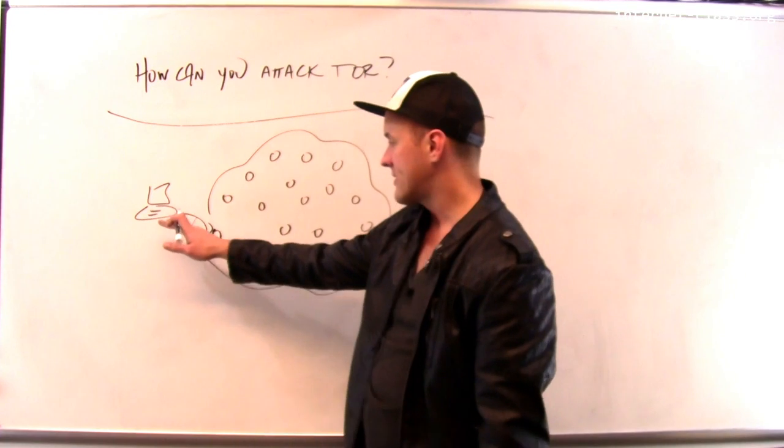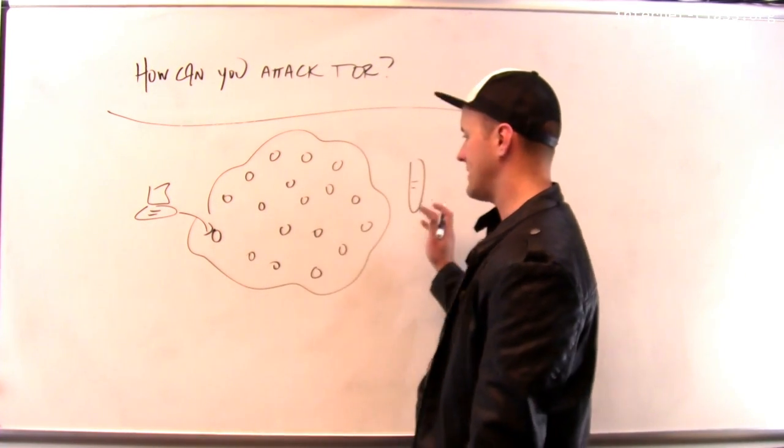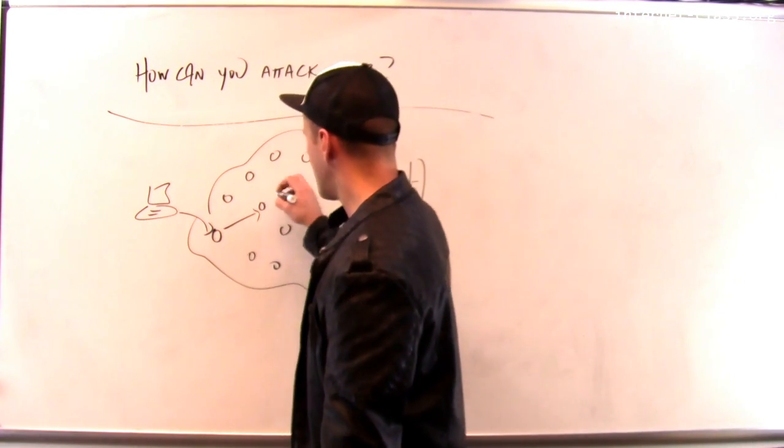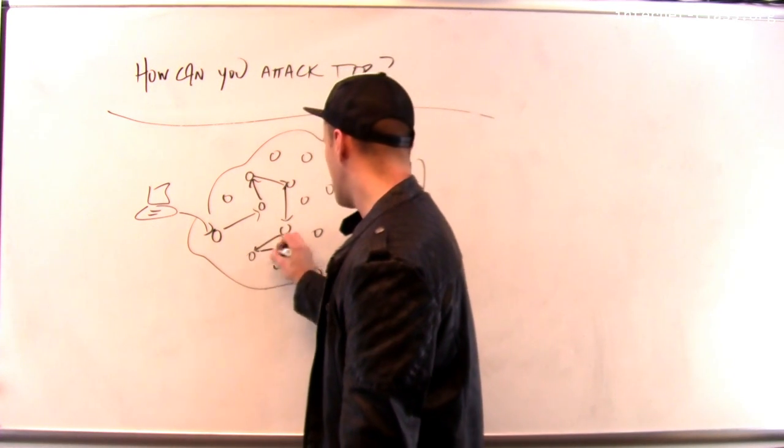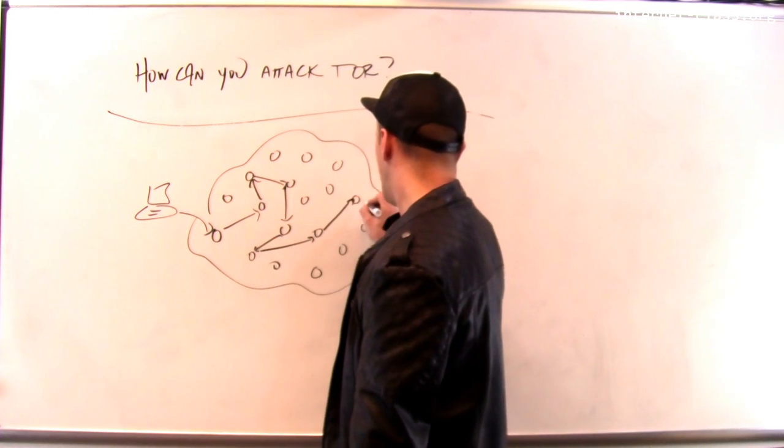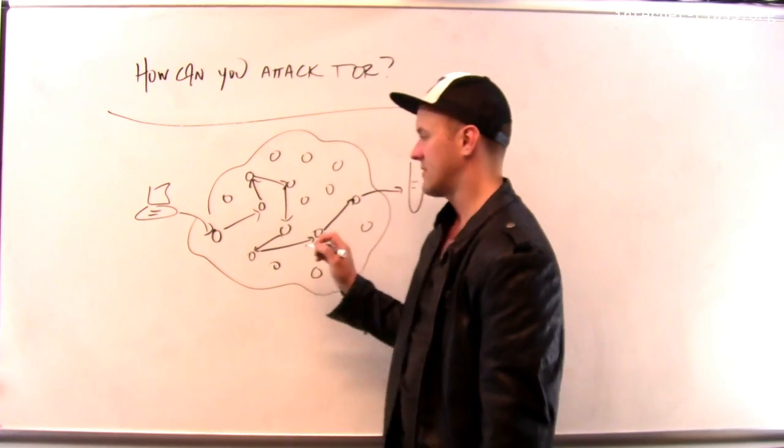How it does that is I connect to a Tor node rather than to my destination, and then Tor sets up what's called a circuit - a series of nodes within the Tor network that are involved in relaying that traffic before it reaches its final destination.